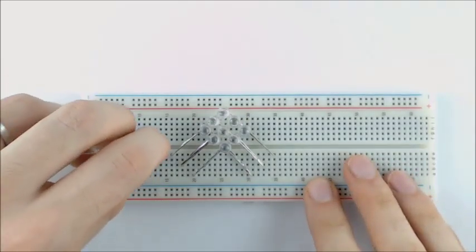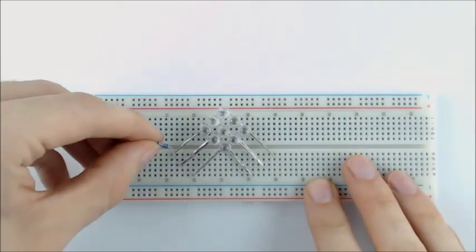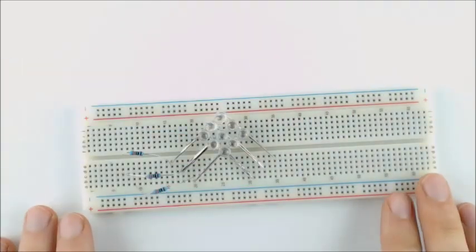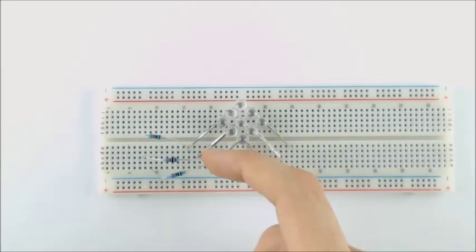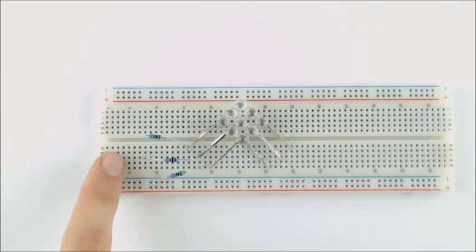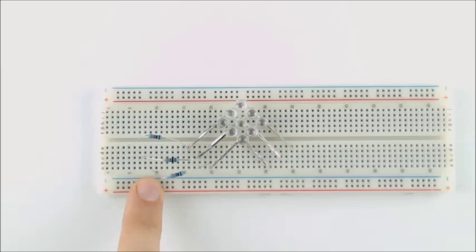After you're done that, just have a quick look and make sure that none of the wires are touching. We should have three points where now we're connecting our three cathodes to.